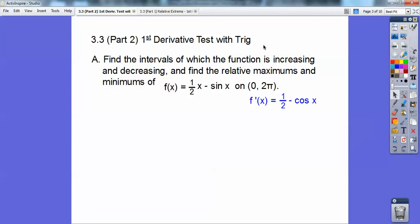All right, so take the derivative first. So the derivative of one-half x is one-half, and the derivative of sine is cosine, so it's one-half minus cosine x.